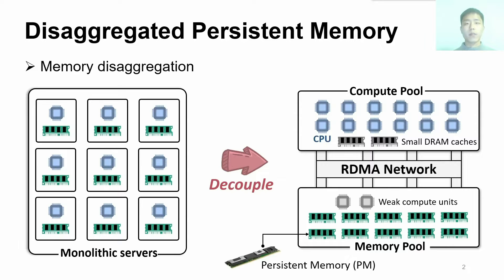With the rise of persistent memory, or PM, data centers can use non-volatile and larger memories with low latency and costs. Therefore, the efficient use of PM becomes important to build a cost-effective disaggregated PM pool.